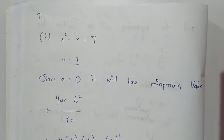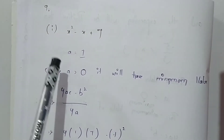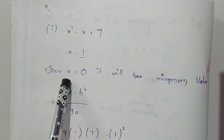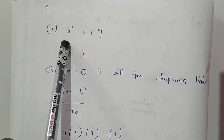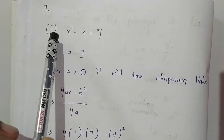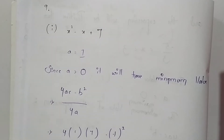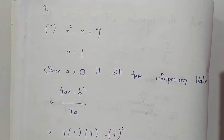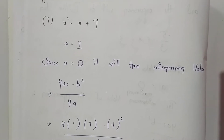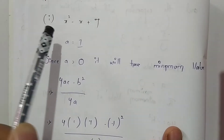The value of the coefficient of x² is 1, which is greater than zero. Therefore this expression will have a minimum value. If the coefficient of x² is greater than zero, we will have a minimum value. If the coefficient of x² — that is, the value of a — is less than zero, then the expression will have a maximum value. In this first expression the coefficient of x² is positive, so it will have a minimum value.